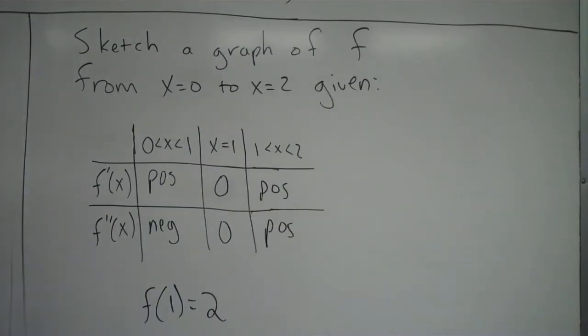All right, so we're going to take a look at another example here of sketching a graph given various information of f prime and f double prime. So we're going to sketch a graph of f on the interval from 0 to 2 again. You could have a different interval than that obviously, but we're just doing the same one. And I've given you different information about f prime and f double prime at various values of x. So it's the same idea as before, just I've set it up in a little different format.